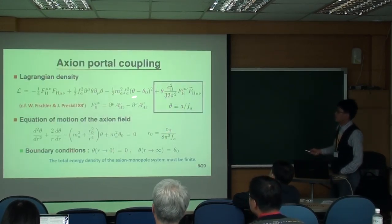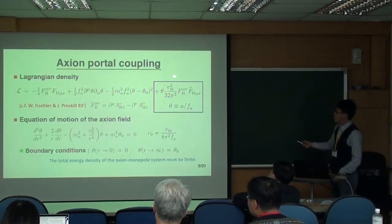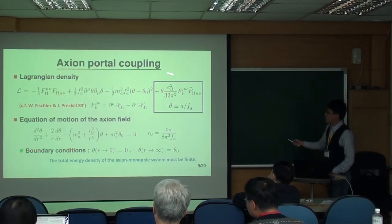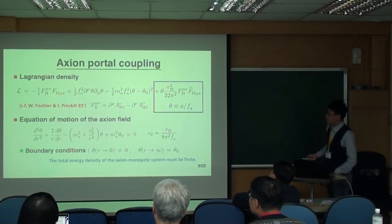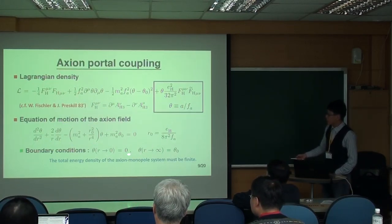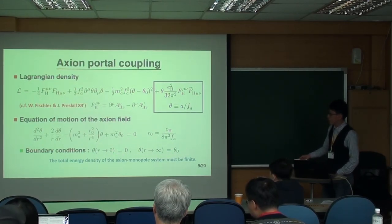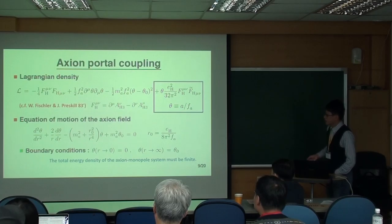So this is the Lagrangian for the axion-photon coupling. The most important term is this last term. From this Lagrangian, we can basically derive the equation of motion for the axion, like this one. And here we impose the boundary condition like this one.